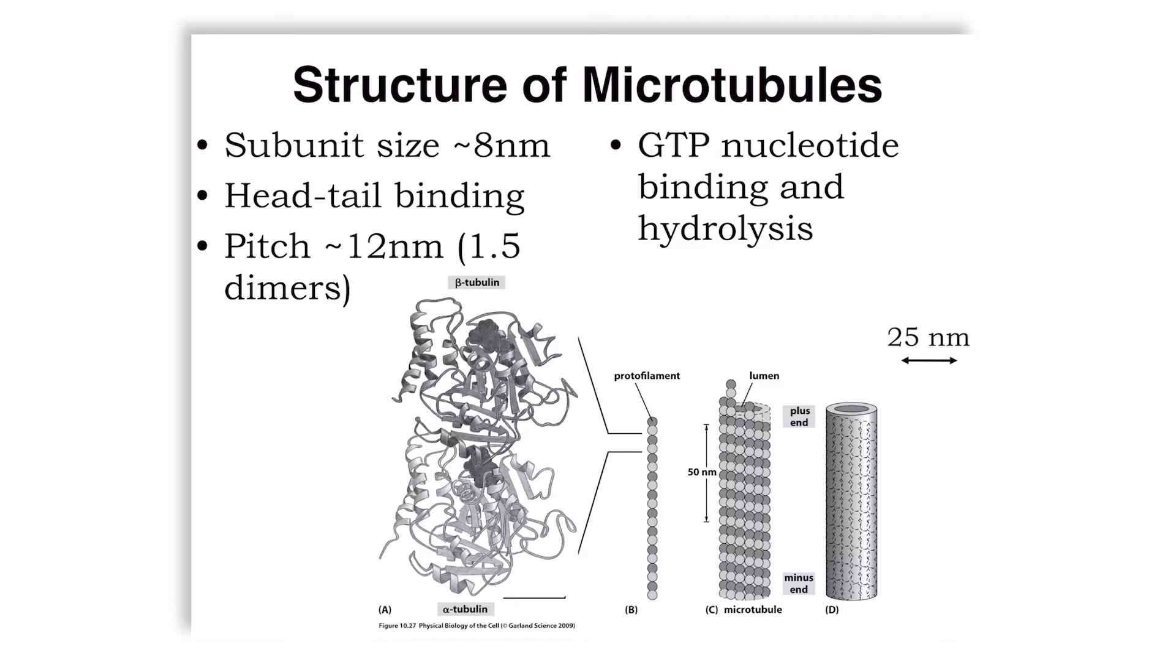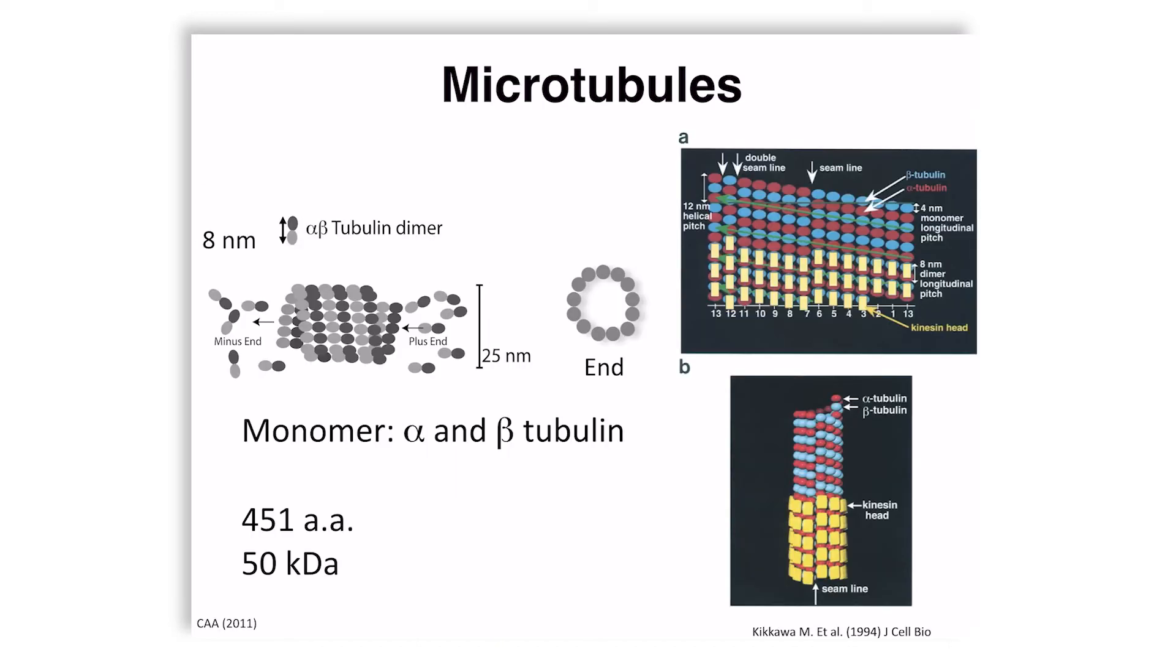They wrap around themselves with a plus end indicating the growing end and the minus end indicating the shrinking end. This does not have to do with electric polarity, just simply kinetic polarity. These cylindrical structures have a diameter of 25 nanometers.